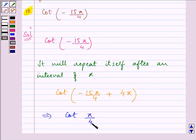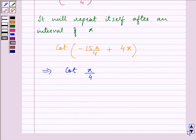Now the value of cot pi by 4 will be reciprocal of the value of tan pi by 4. Since tan pi by 4 is 1, so that means cot pi by 4 will also be 1.